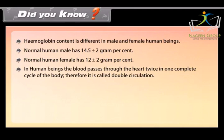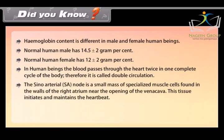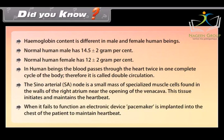The sino-atrial (SA) node is a small mass of specialized muscle cells found in the walls of the right atrium near the opening of the vena cava. This tissue initiates and maintains the heartbeat. When it fails to function, an electronic device pacemaker is implanted into the chest of the patient to maintain heartbeat.